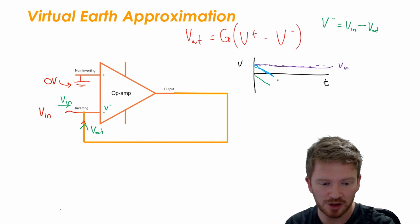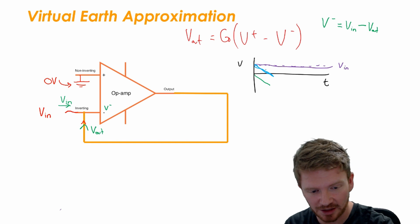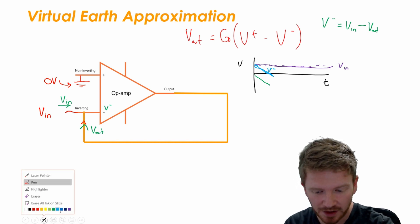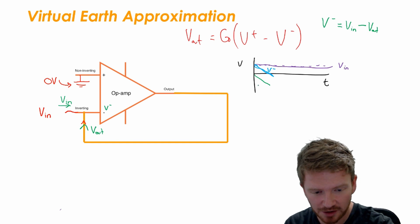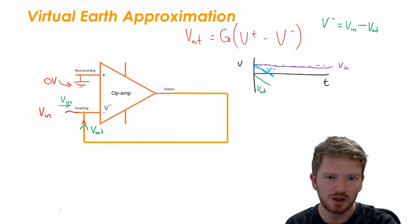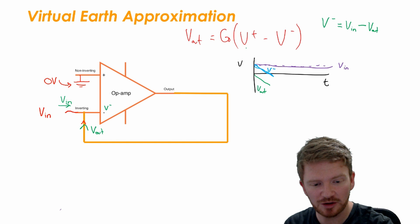And it will reach a point where it's equal to zero or indeed it goes slightly below that zero. So this blue, this yellow line here is V_inverting and the green line is V_out.